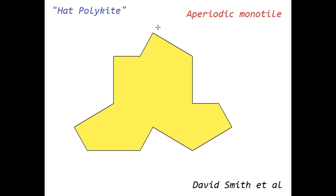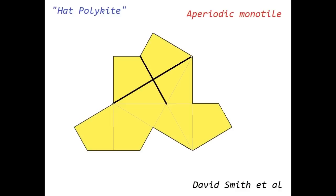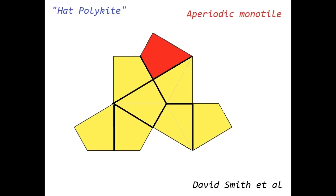Here is the hat polykite, the aperiodic monotile by David Smith et al. Let's draw a few construction lines so we can get a better idea of what this consists of. Now you should be able to see why it is called a polykite — all these shapes are kite shapes.